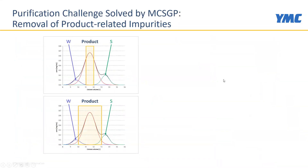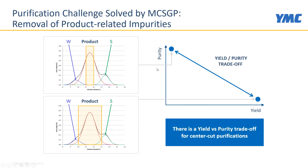MCSGP addresses the challenge shown here on these two chromatograms. If we want to get a product flanked by overlapping impurities in the front and back, we have to take a very narrow center cut to fulfill purity specifications. If we take a larger cut, we include impurities on both sides. So we have a choice between high purity and low yield — excluding a large portion of product from the pool — or high yield but low purity. This is the typical yield-purity trade-off in single-column batch chromatography when product-related impurities are present.